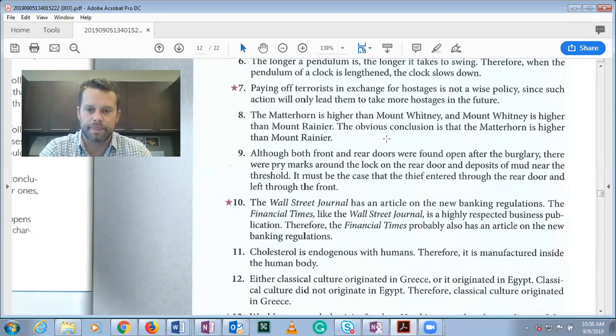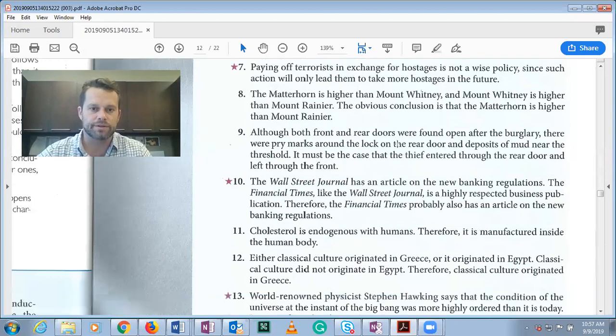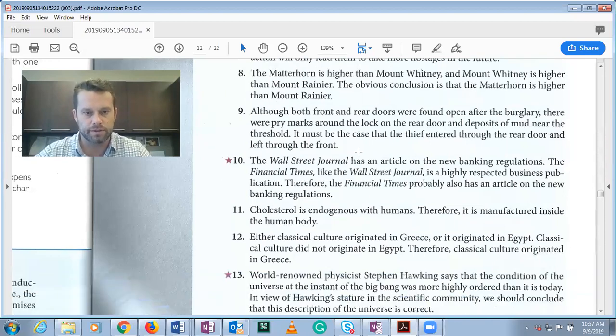But it doesn't of necessity mean that the thief entered through the rear door and left through the front. Maybe the thief tried to pry the rear door open, couldn't get it open, but then walked around the front and it was unlocked, and then they were able to get in that way. It doesn't prove its conclusion necessarily 100% in all cases—there are alternative explanations here, so it's inductive.